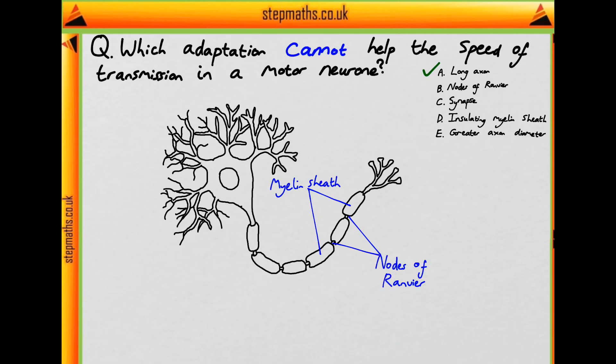Now I'm actually going to deal with B and D together. So here we have a diagram of a motor neuron with the myelin sheath labelled, that's these, and the nodes of Ranvier labelled, which are these areas between the myelin sheath where the myelin sheath is not covering the axon.